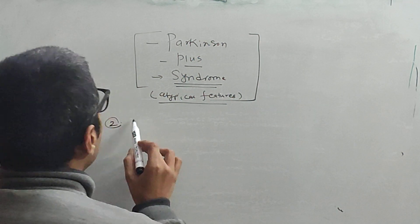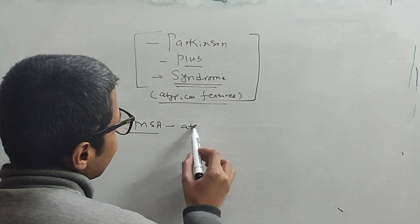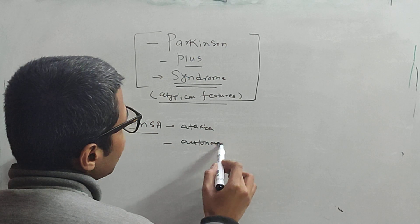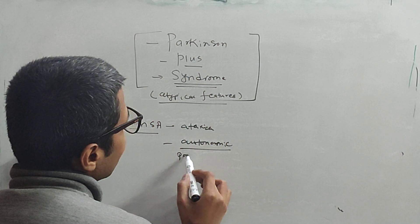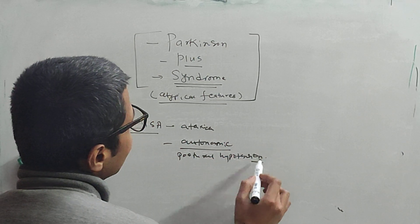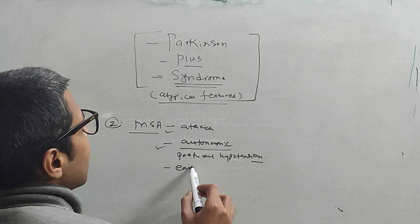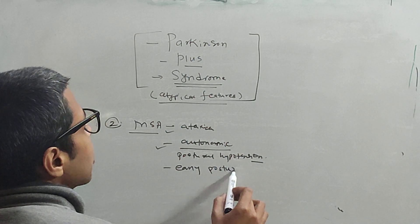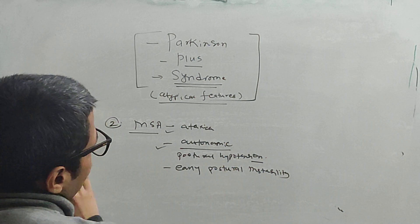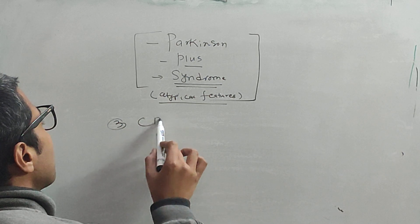The second condition is Multiple System Atrophy. In this, in addition to Parkinsonian features, you can get ataxia with dysmetria and early autonomic involvement. Severe autonomic involvement can be present in the form of postural hypotension and urinary incontinence or retention. So the key features are ataxia, autonomic involvement, and early postural instability seen early in the disease course.